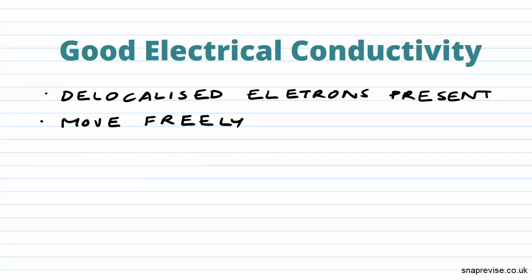Now let's look at conductors. Electrical conductivity is one of the most useful properties of metals. The reason that metals are conductors is that they have these delocalised electrons present throughout the structure. These electrons are able to move freely, and this is what allows metals to carry current.